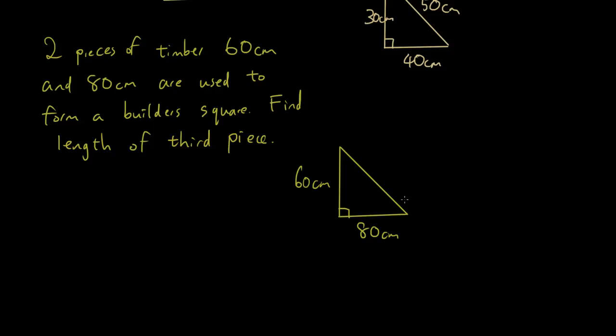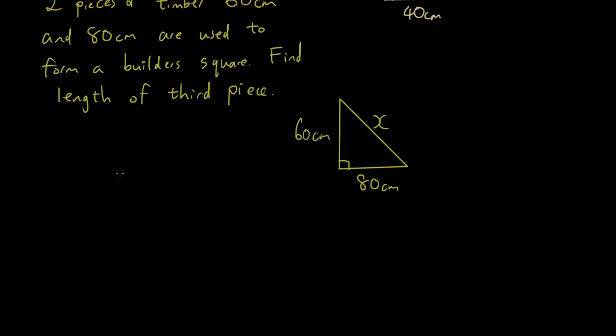This device that I was just talking about, we now have 60 centimeters on one side, 80 centimeters on the other side, and you want to find out the third piece. So let's call this x. Then in order to find that you would go a squared plus b squared equals c squared.